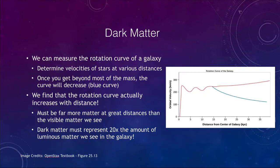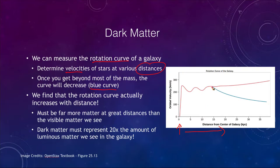Dark matter can be determined by looking at the rotation curve of a galaxy instead of looking at just a single star. We look at the velocities of stars at different distances — starting towards the center and going further out — to determine the rotation curve of the galaxy. Once you get beyond most of the mass, the curve will decrease. That is how orbits work when most of the mass is inside your orbit, and this is very similar to our solar system where all the mass is essentially in the sun, so planets show a decreasing velocity the further out you go.